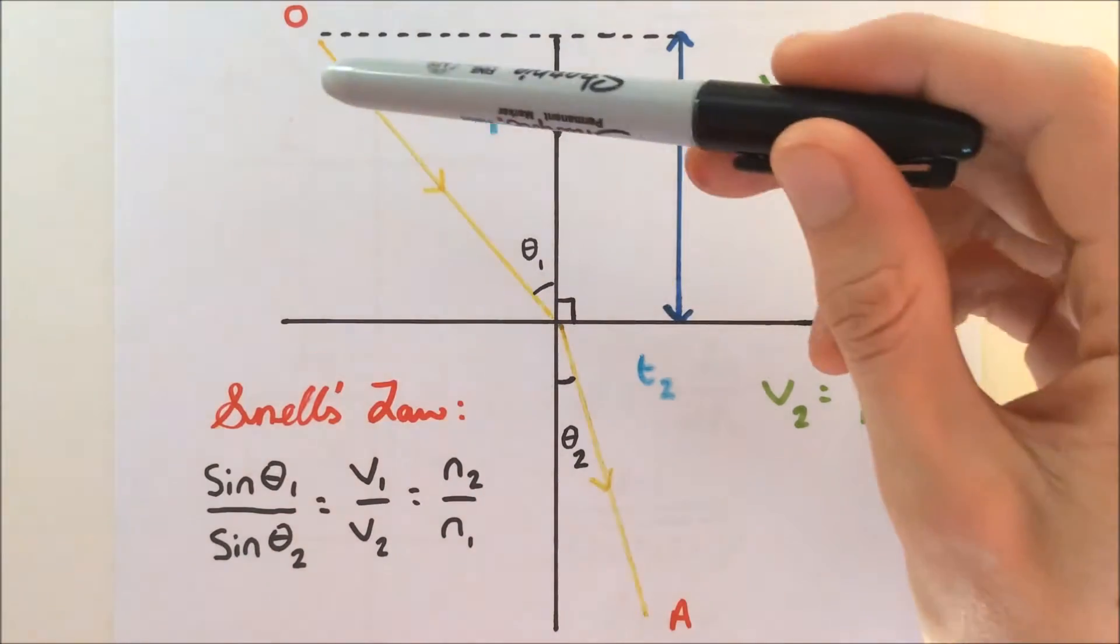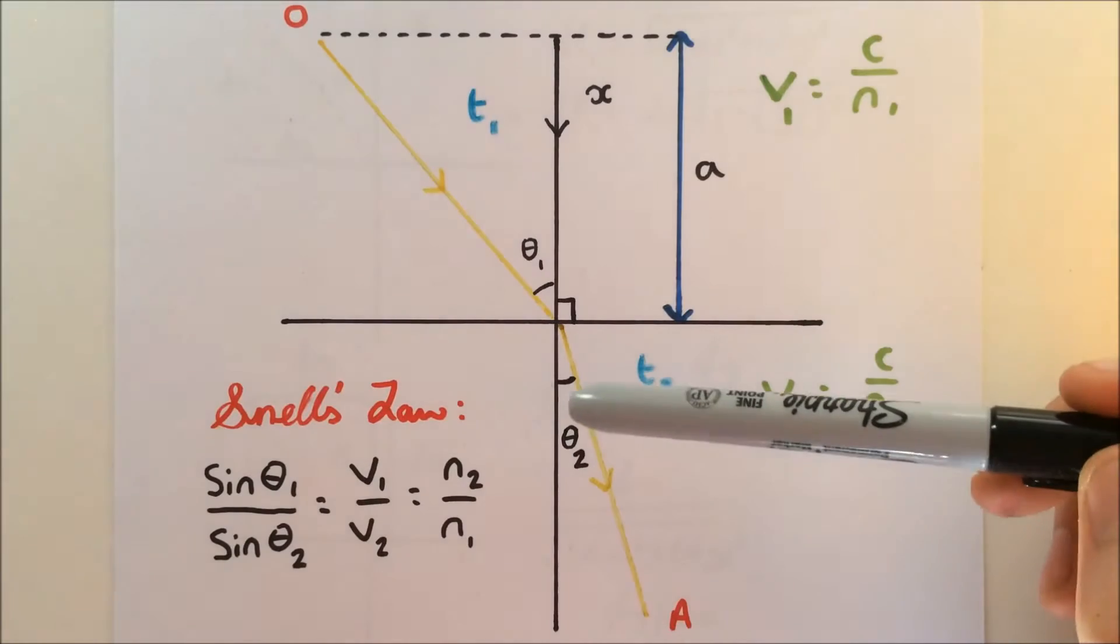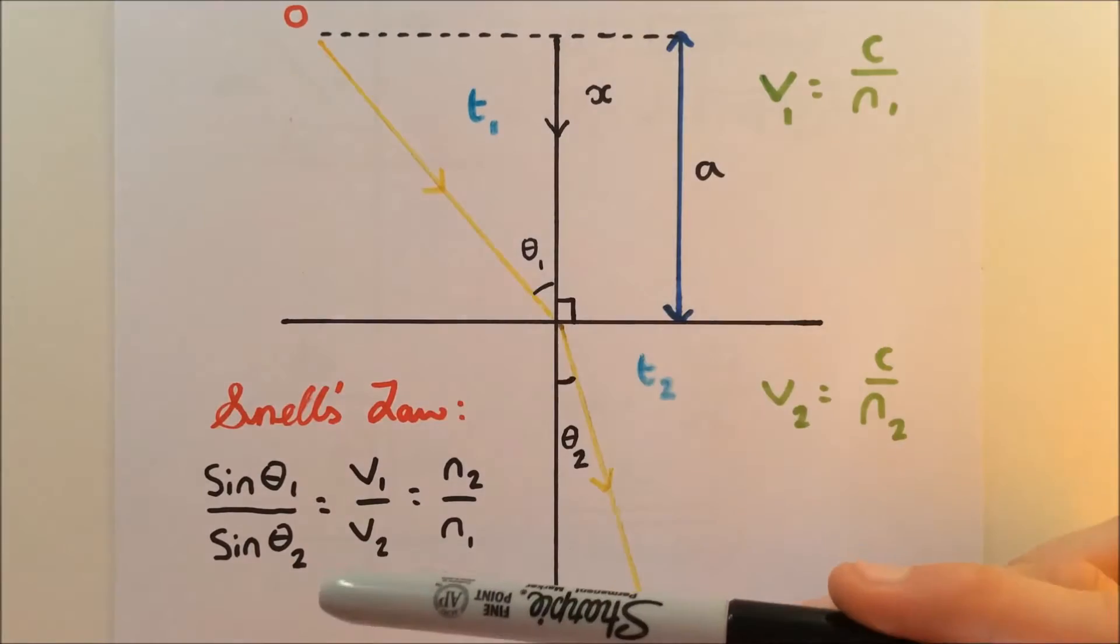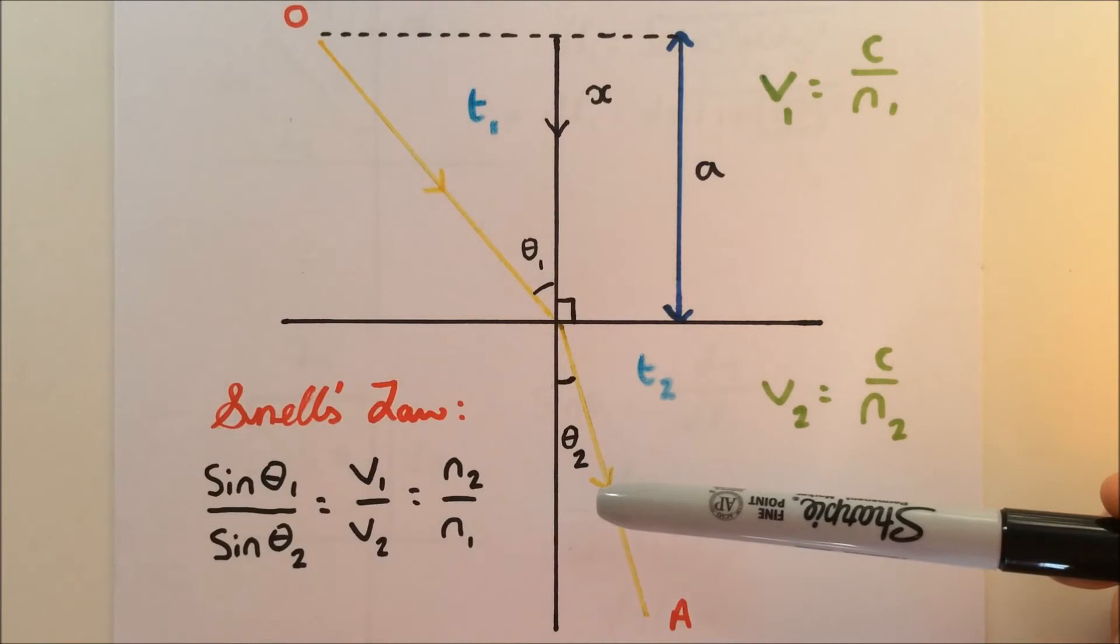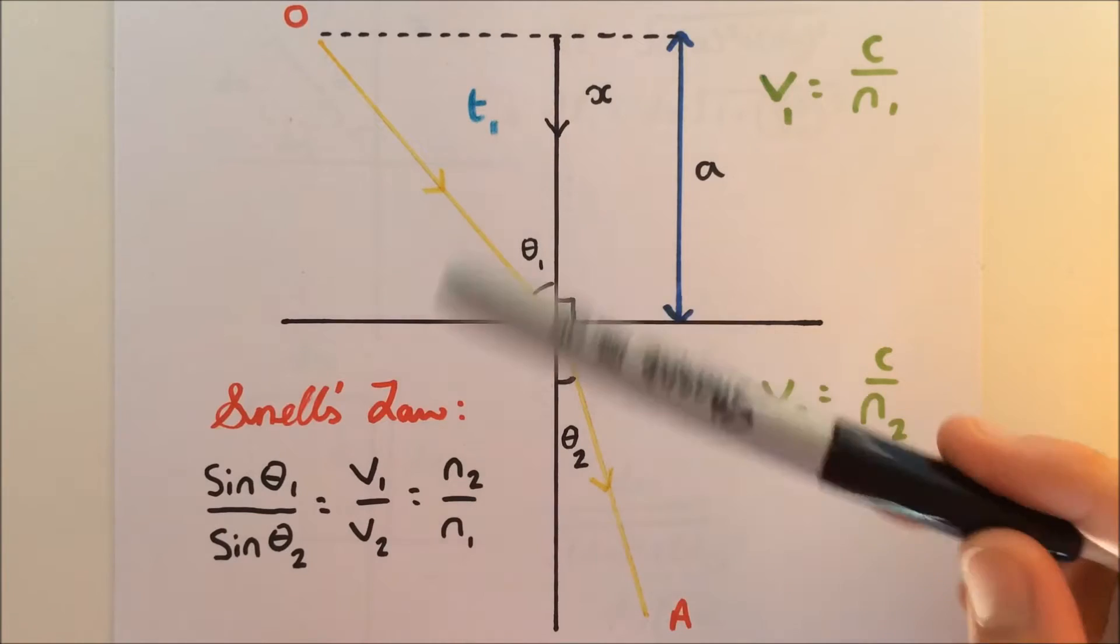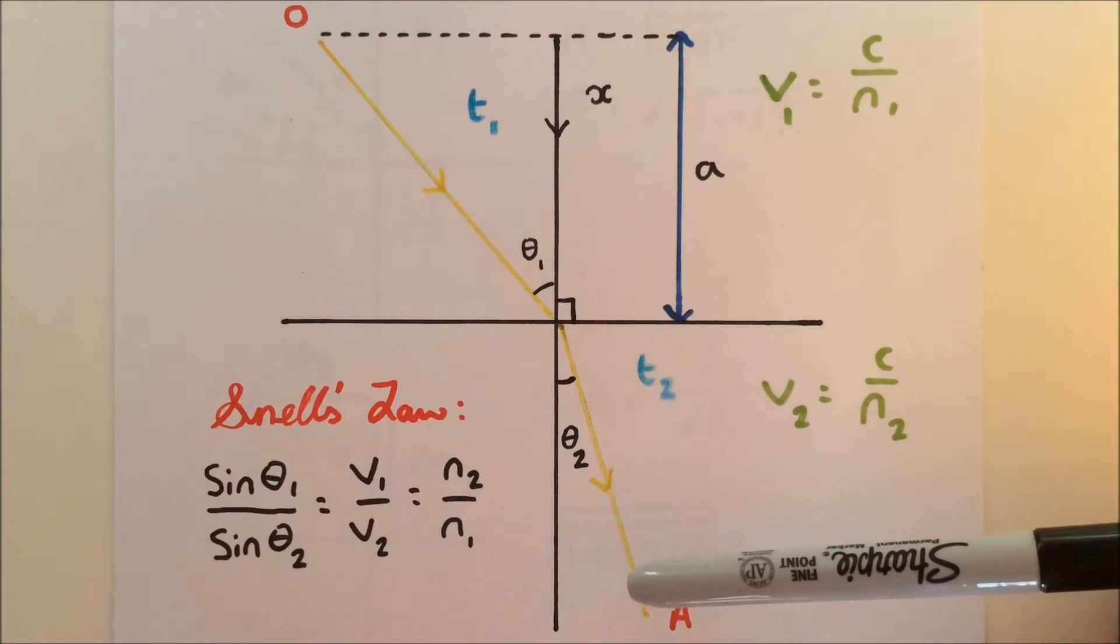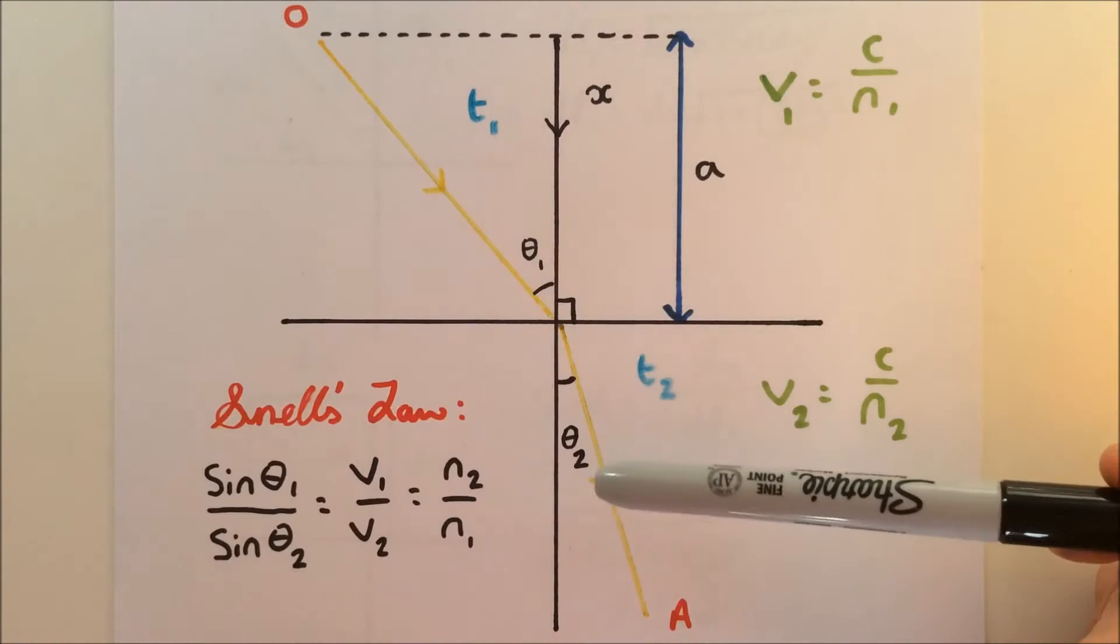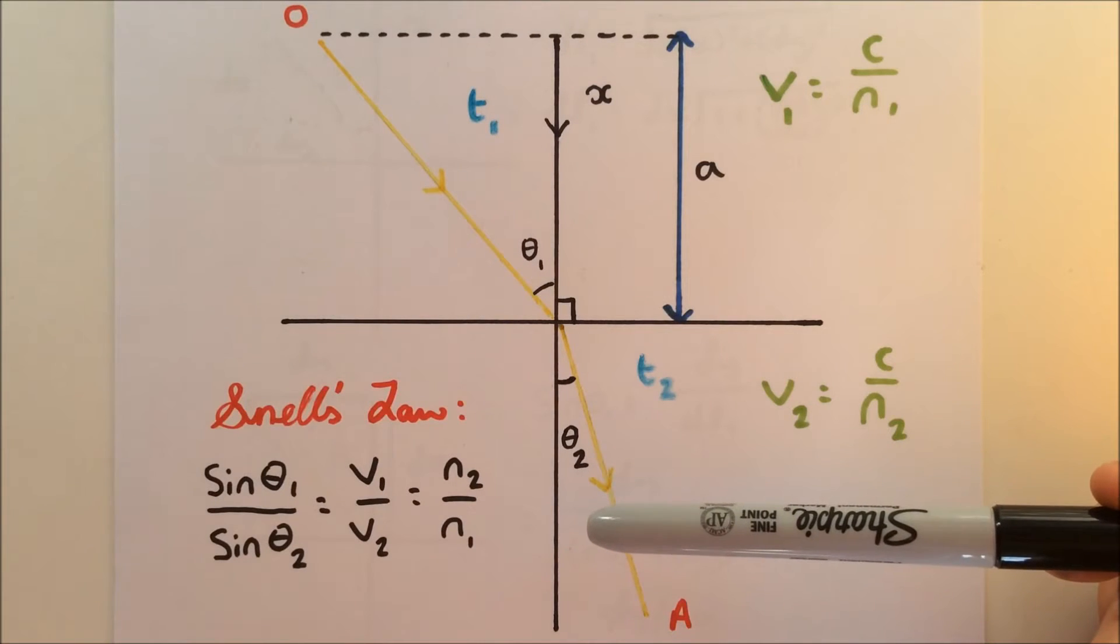In this case of Snell's Law, it's a straight line. Snell's Law states that the sine of the angle in medium 1 divided by the sine of the angle in medium 2 is equal to the velocity of the light in medium 1 divided by the velocity of light in medium 2, where theta 1 is the incident angle and theta 2 is the refractive angle.